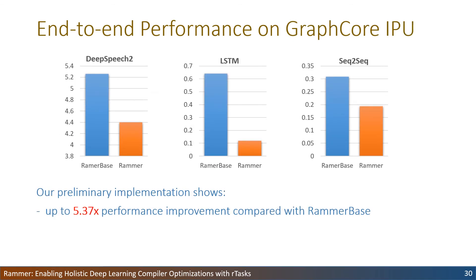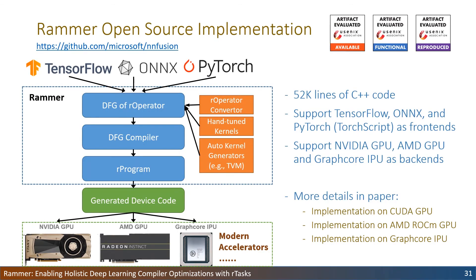We also conduct a preliminary evaluation of Reimer on a Graphcore IPU, a state-of-the-art DL accelerator with an architecture quite different from GPUs. Reimer's preliminary implementation brings up to 5x performance improvement compared with ReimerBase, demonstrating the effectiveness of Reimer's abstractions on new accelerator architectures. We have implemented Reimer with 52,000 lines of code and open-sourced it on GitHub. Currently, Reimer supports TensorFlow, ONNX, and TorchScript as front-end model input, and supports NVIDIA GPU, AMD GPU, and Graphcore IPU as backend devices.